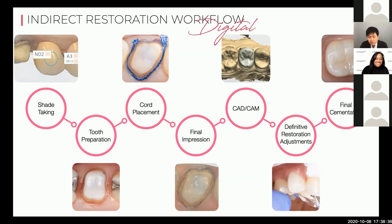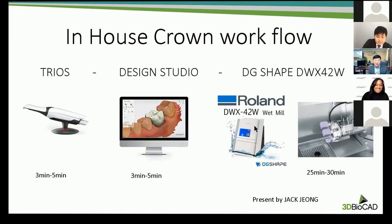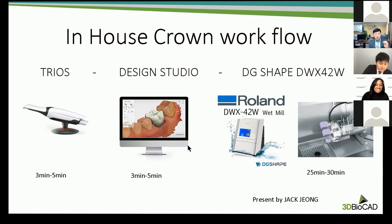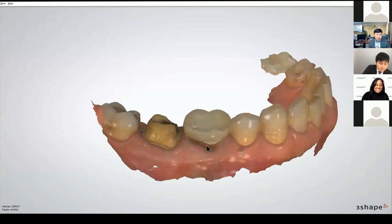Now Jack will take over to cover the CAD/CAM portion in detail and do a live demonstration of the design studio and milling machine. Thank you, Dr. Park — a very nice presentation. Today we're talking about the in-house fabrication of the crown workflow: starting with the Trios, going over the design software — which is Design Studio from 3Shape — and also showing the Roland DG shape DWX 42W wet, which is for making glass ceramic or resin crowns in-house. I want to open a 3D view from the 3Shape Trios scan file and show what happens behind the monitor.